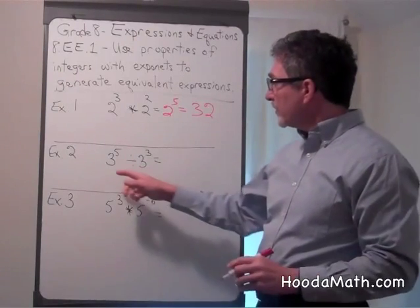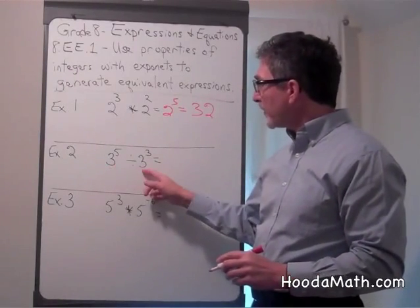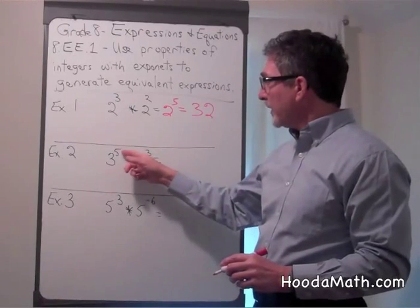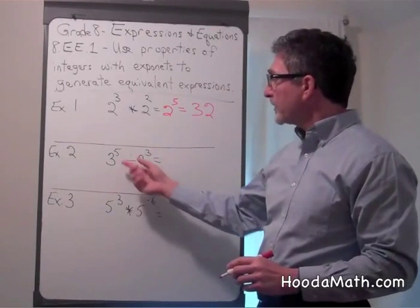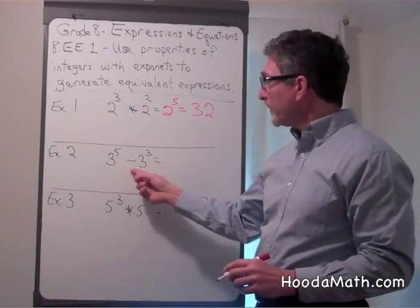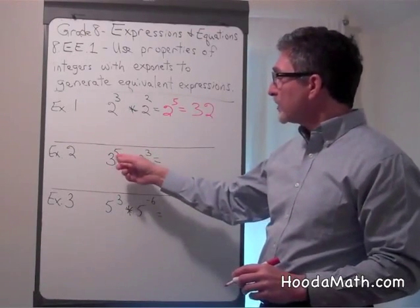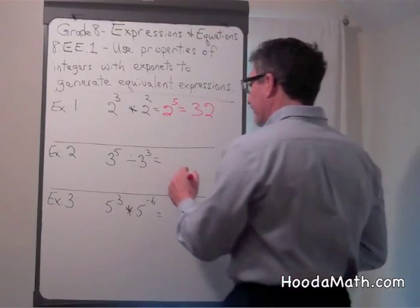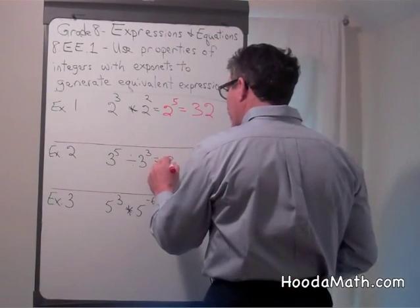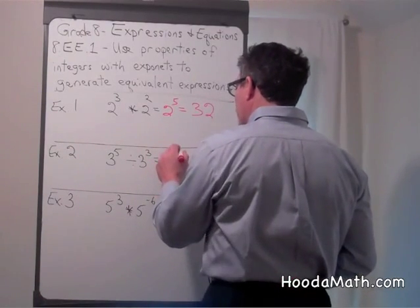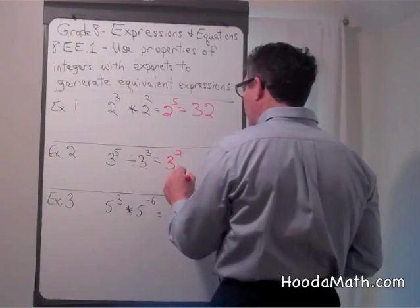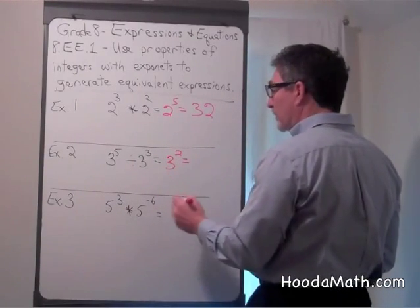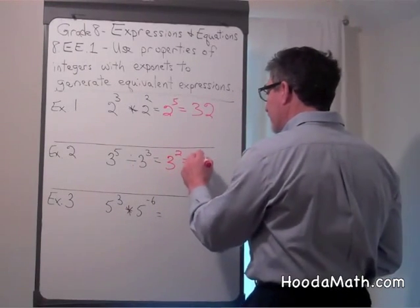When the bases are the same and they have exponents and you're dividing, you subtract the exponents. So it's 3 to the second power. 3 squared equals 9.